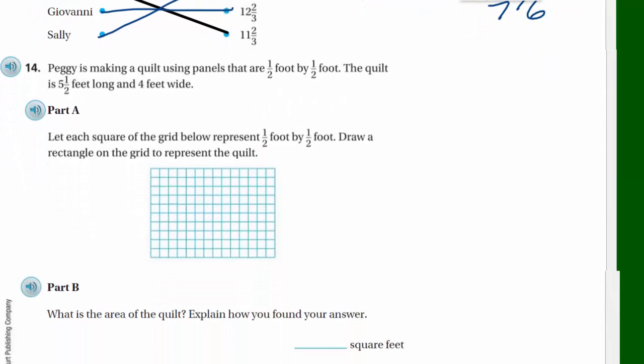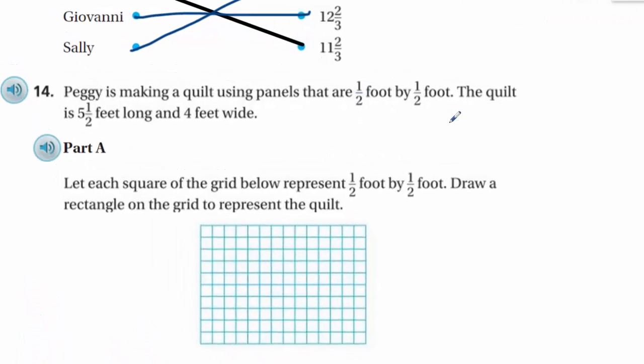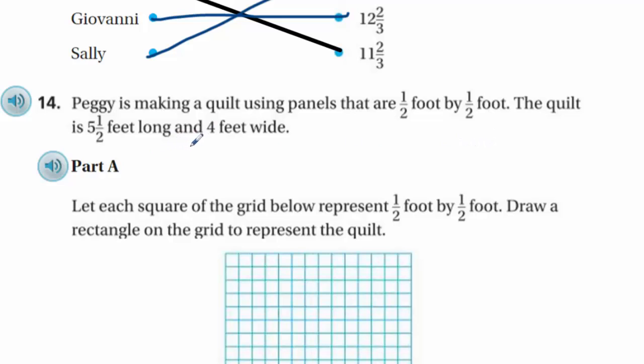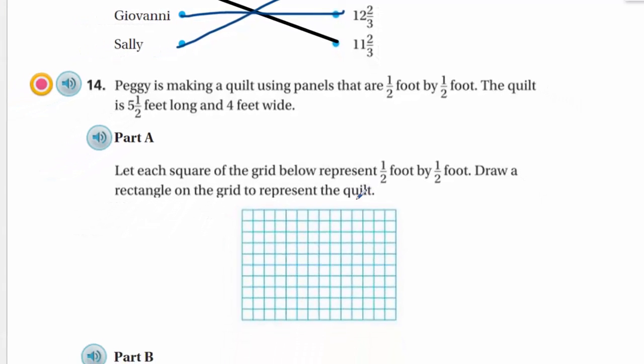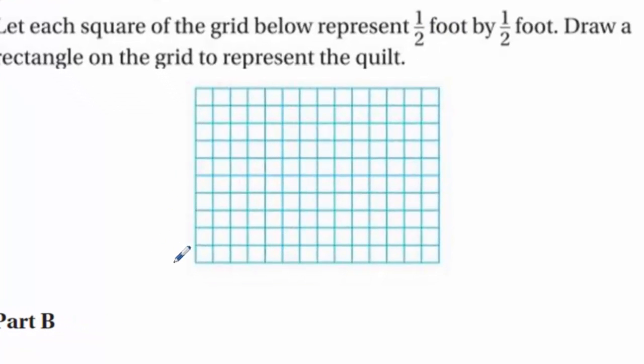Fun, fun, my friends. Peggy is making a quilt using panels that are a half foot by a half foot. The quilt is 5 and 1/2 feet long and 4 feet wide. Let each square of the grid below represent one half foot by one half foot. Draw a rectangle on the grid to represent the quilt. Each one of these little units here, each square on the grid, is a half foot by half foot. So looking at this, we can see if we just went half, one, one and half, two, two and half, three, three and half, four, four and half, five. So we have 5 feet for the width here. We only need 4 feet. Here we have 7 feet across. We only need 5 and 1/2.